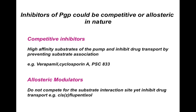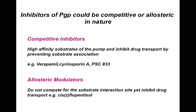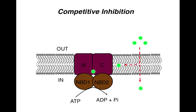Allosteric modulators, on the other hand, don't compete for the substrate interaction site but can still inhibit drug transport. In this illustration, the orange molecule is the competitive inhibitor and the green molecule is the anti-cancer drug entering the cell and trying to be recruited by PGP.